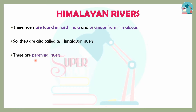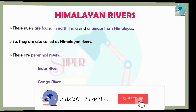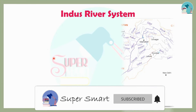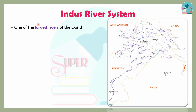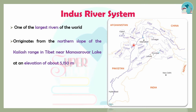The Himalayan Rivers are perennial rivers and are among the largest rivers in the world. One of these is the Indus River, which is also one of the oldest rivers. It originates from Tibet near the Kailash Range and Mansarovar Lake.